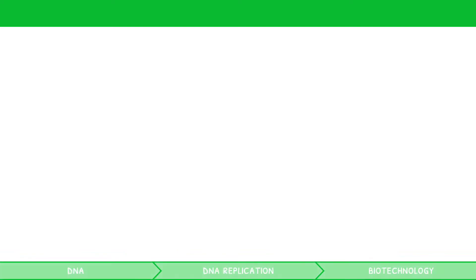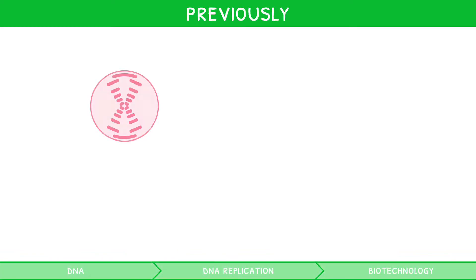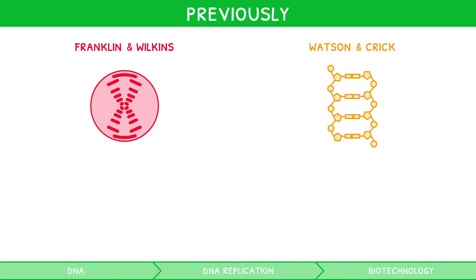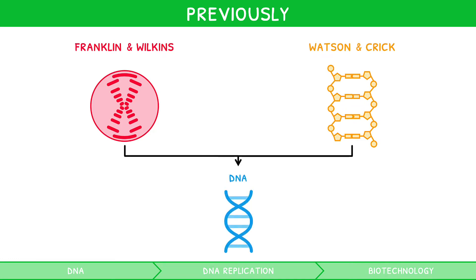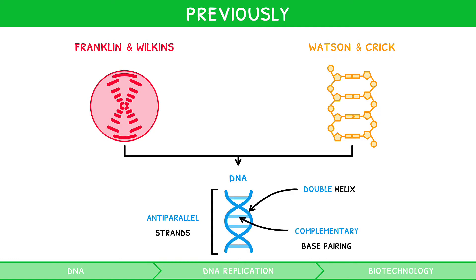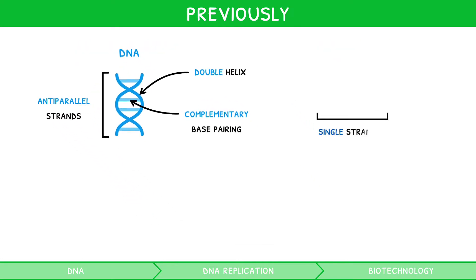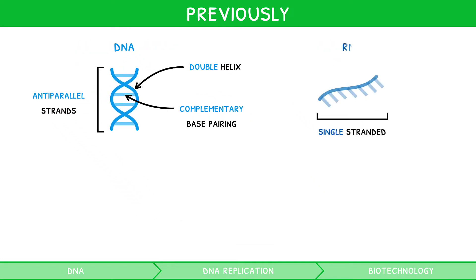In that video, we discussed the work of both Franklin and Wilkins and Watson and Crick, to reveal the double helix structure of DNA, consisting of two antiparallel strands of nucleotides linked by complementary base pairing. We contrasted this to the single-stranded structure of RNA and stated that both form the genes for an organism.